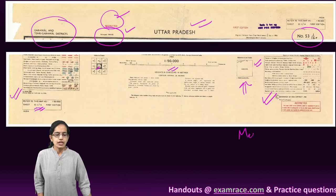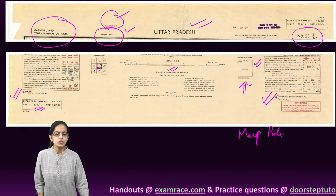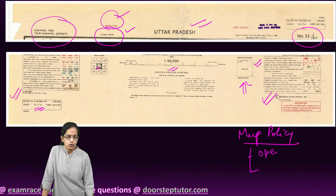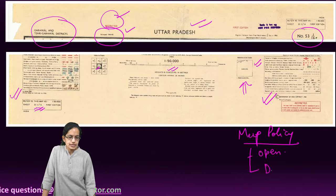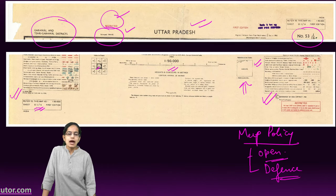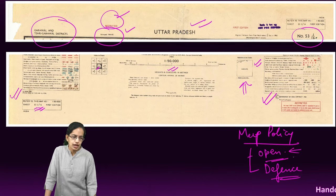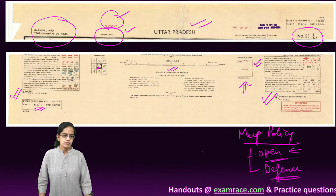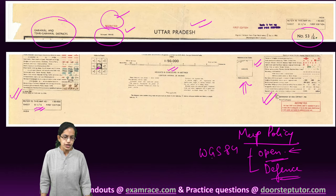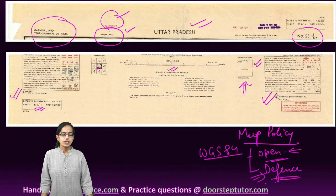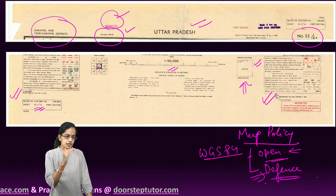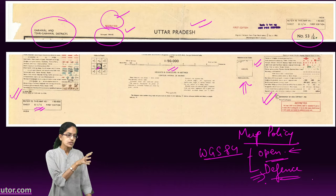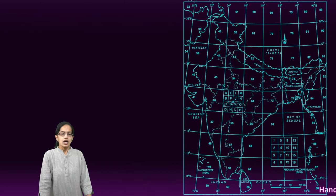Under the national map policy, there are two types of maps: the open series and the defense series. Open series maps are unrestricted and available to the public; they are based on the UTM projection using the WGS 84 datum. Defense maps are based on certain formulated guidelines and focus on specific defense needs and requirements.